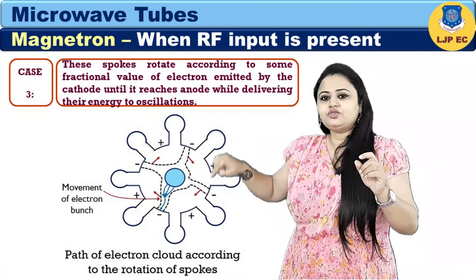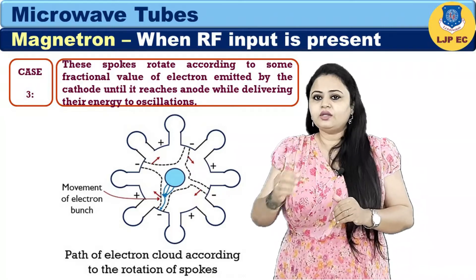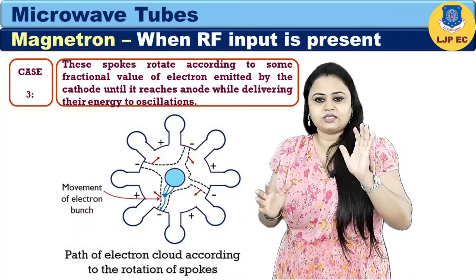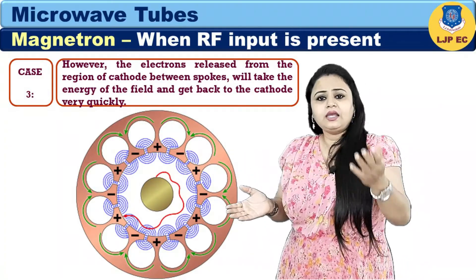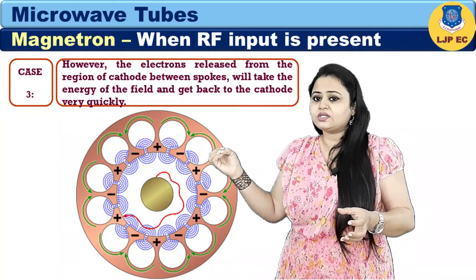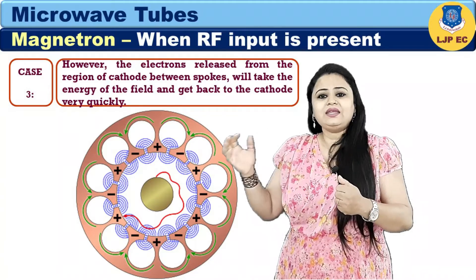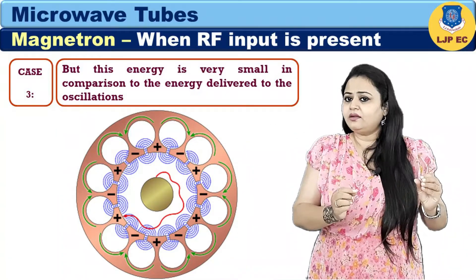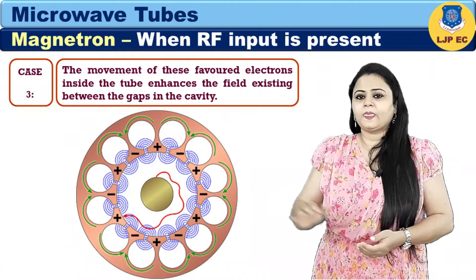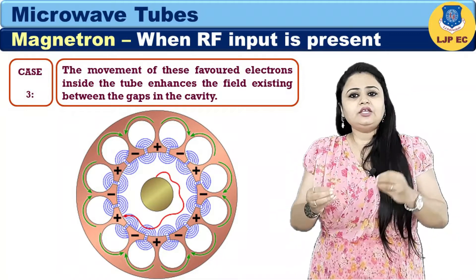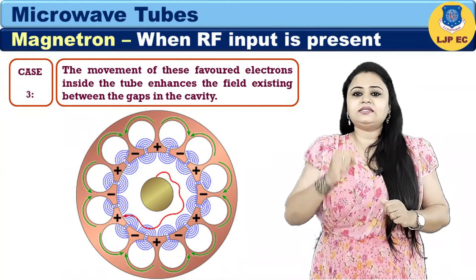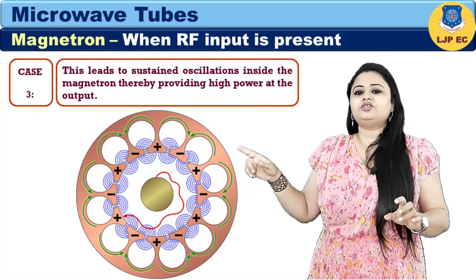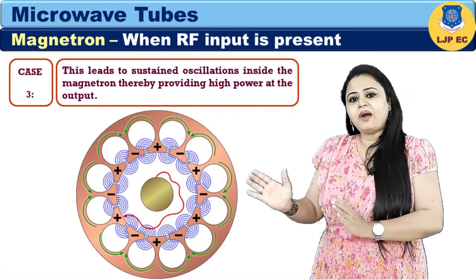These spokes rotate as a fraction of electrons emitted by the cathode travel toward the anode, delivering their energy to the oscillations. Electrons released from the region between spokes take energy from the field and return to the cathode very quickly, but this energy is very small compared to the energy delivered to the oscillations. The movement of these favored electrons enhances the field existing between the gaps in the cavity, leading to sustained oscillations inside the magnetron and providing high power at the output.